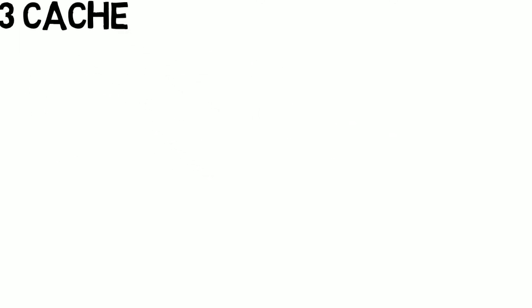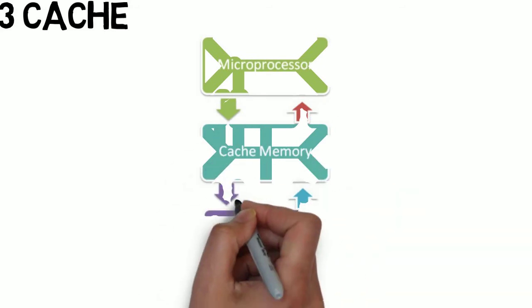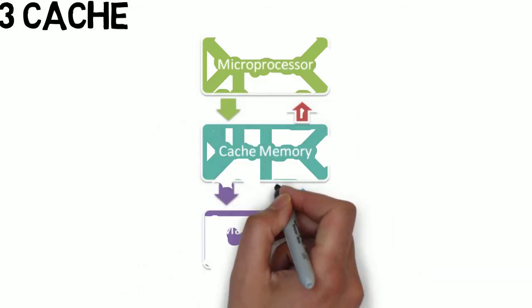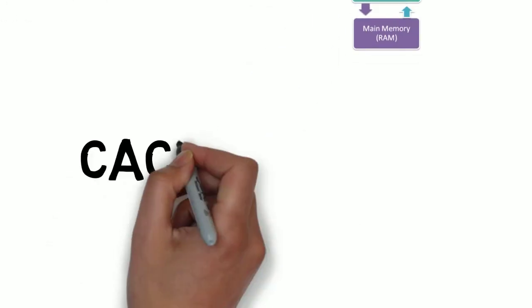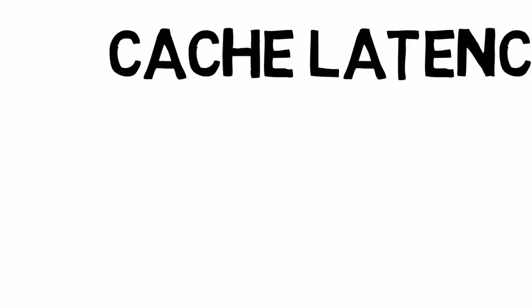How does it work? If you understand the types of cache memory, it's very easy to understand how it works in principle. First, the CPU looks for the instruction it needs to execute from L1 cache. If the CPU does not find the requested instruction, it'll go to L2 cache, and if it doesn't find it there either, it'll look in RAM. The delay caused when the CPU doesn't find the instruction at each level is called cache latency.